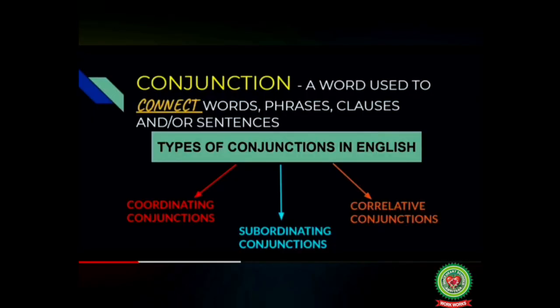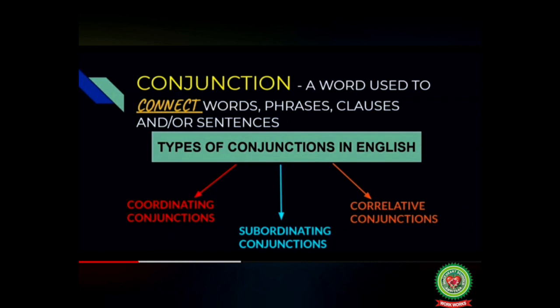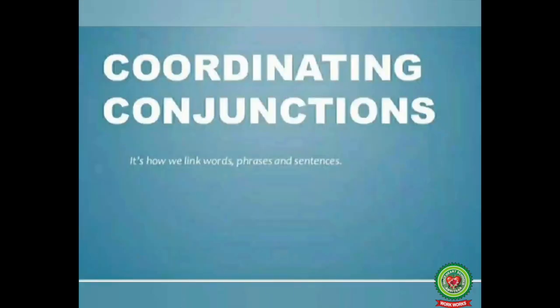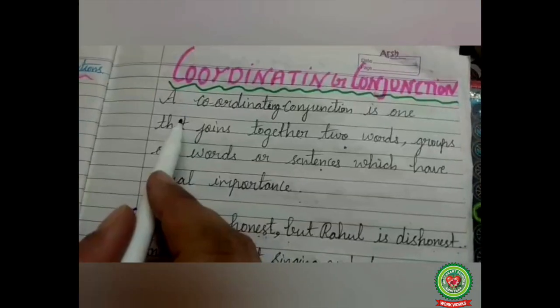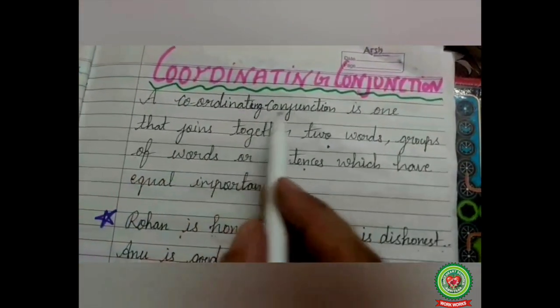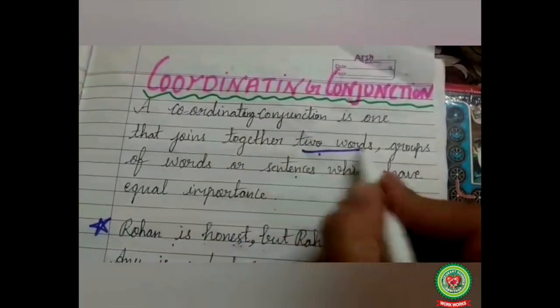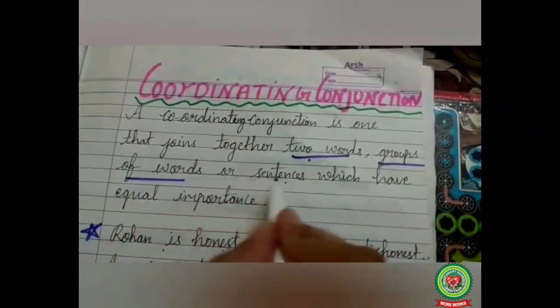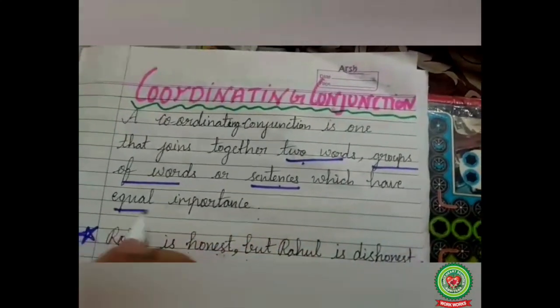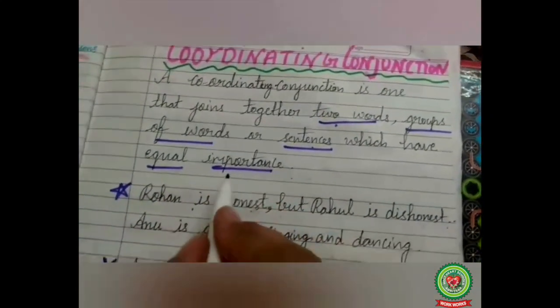We also discussed the different types of conjunctions: number one is coordinating conjunction, number two is subordinating conjunction, and number three is correlative conjunction. Now in this video we will discuss coordinating conjunction in detail. A coordinating conjunction is one that joins together two words, groups of words, or sentences which have equal importance.